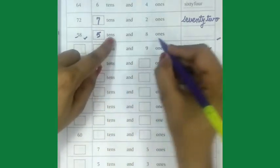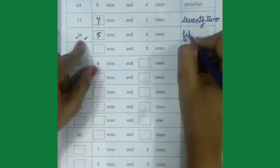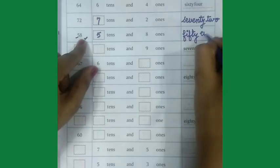Come on number 3, 58, 5 tens and 8 ones. Along with we will write number name F-I-F-T-Y-50-E-I-G-H-T-8.